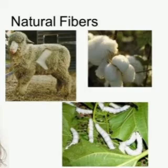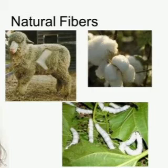Woolen threads are used to make sweaters, shawls, and more. The next fiber is silk. We obtain silk from silkworms. The silkworm lives on the mulberry tree and makes a cocoon around itself. We get silk from these cocoons, and the silk threads are woven to make silk clothes. These are the natural fibers: cotton, wool, and silk.